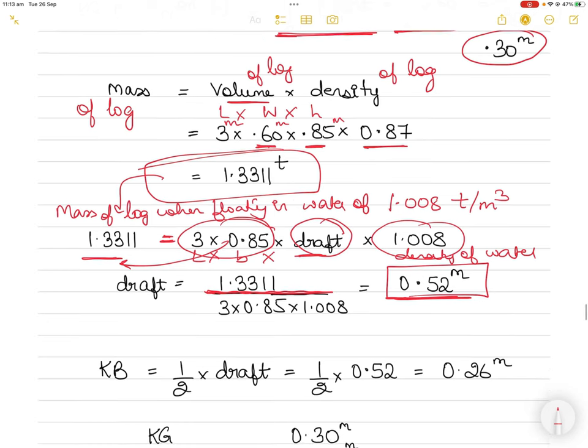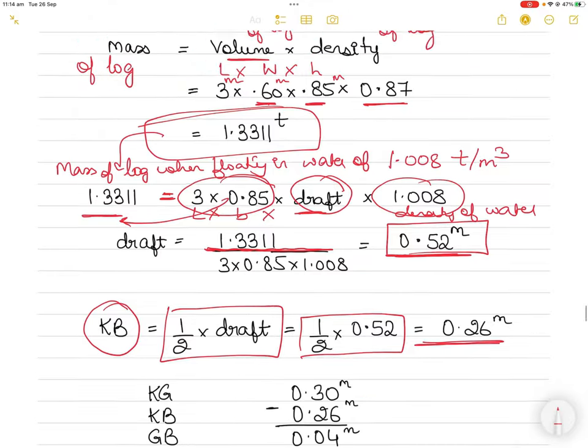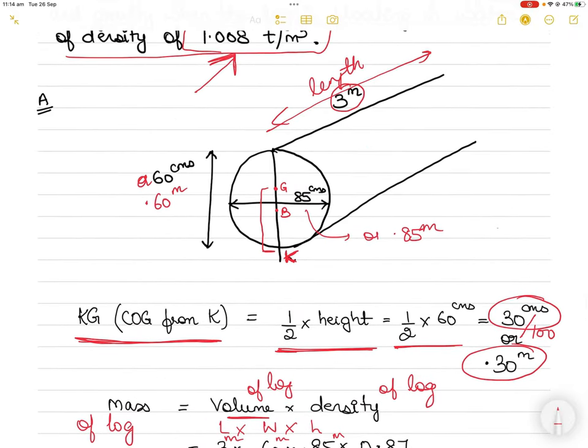That is your draft at which the log is floating, 0.52 meters. How do you find KB or the center of buoyancy from the keel of a log? It's always half of draft. Once you find the draft at which the log is floating, half the draft: 0.52 divided by 2 equals 0.26 meters. The center of buoyancy depends on the buoyancy of the log, and buoyancy is only discovered when the log is floating in water.